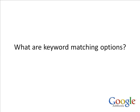Google has four keyword matching options which help determine which Google searches can trigger your ads to appear. These options can help you control who sees your ads. You can set each search targeted keyword to have one of these four settings.